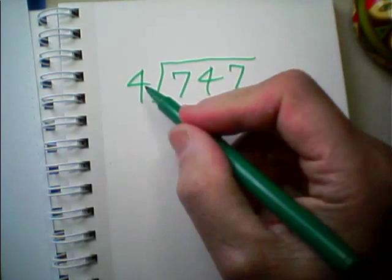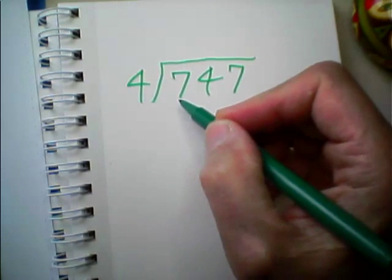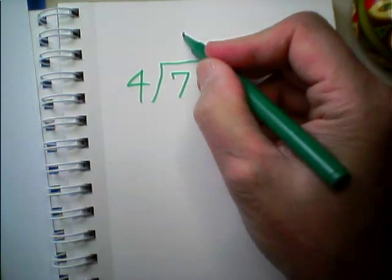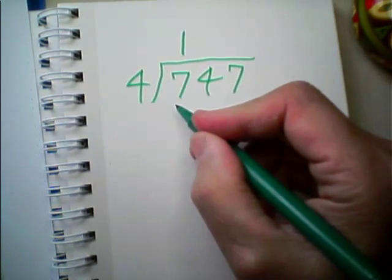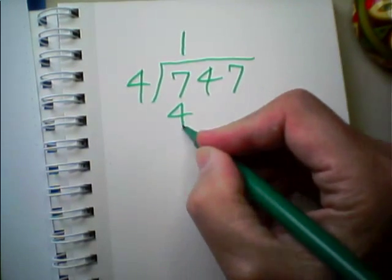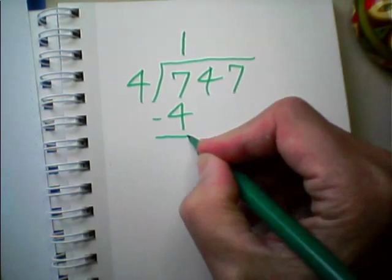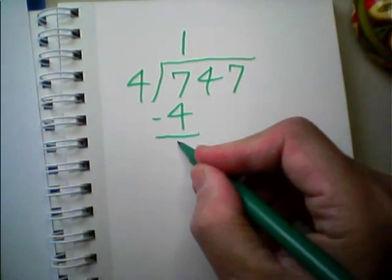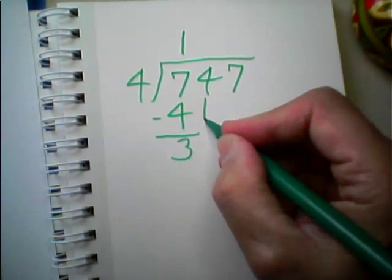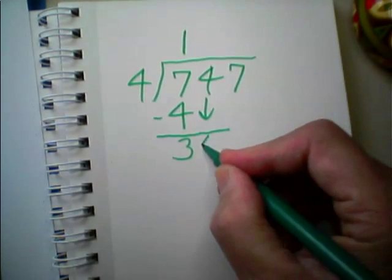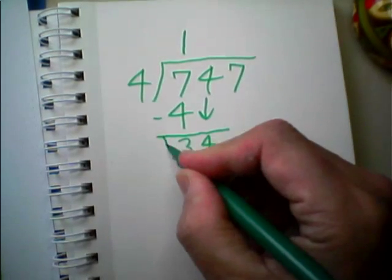How many groups of 4 can you squeeze out of 7? 1. Then you multiply: 1 times 4 is 4. Then you subtract: 7 minus 4 is 3. Then I bring down and I rewrite the division house.